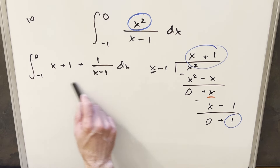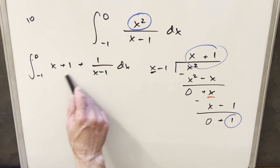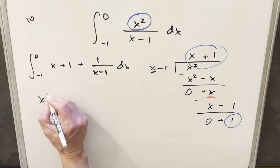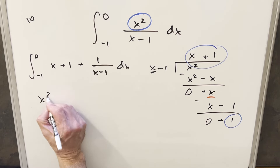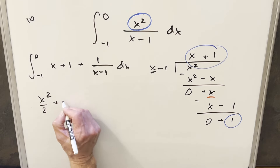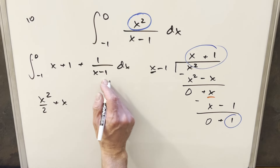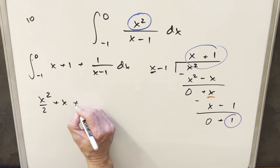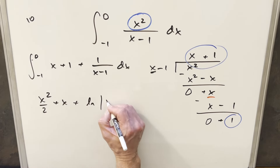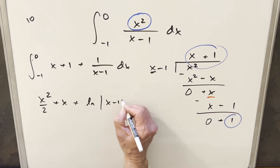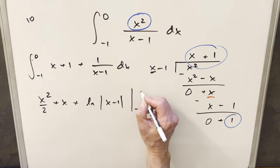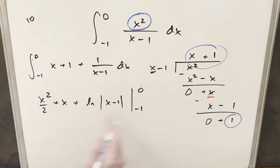Everything we have left is easy to deal with. The first two terms use the power rule, giving x squared over 2 plus x. The integral of 1 over x minus 1 is natural log of the absolute value of x minus 1. We evaluate from minus 1 to 0.